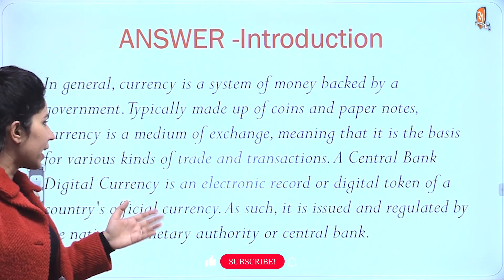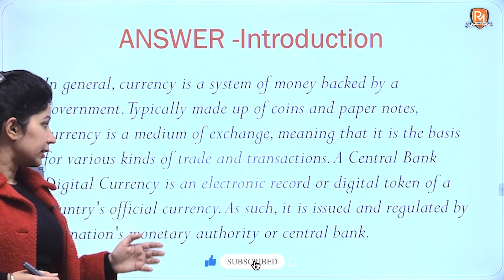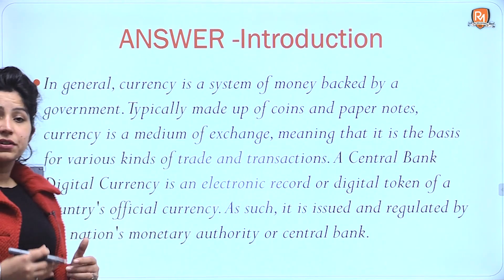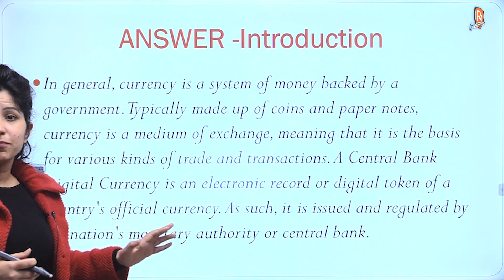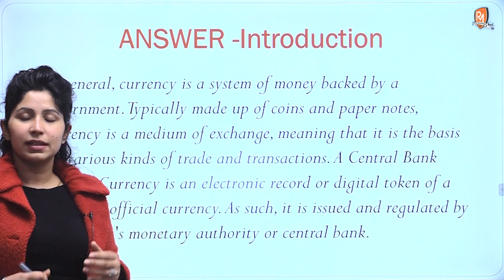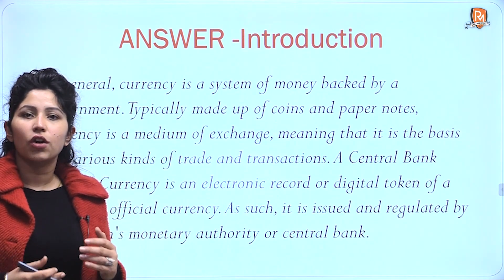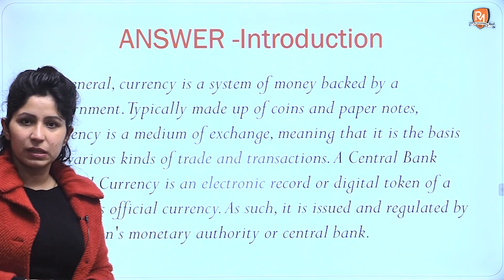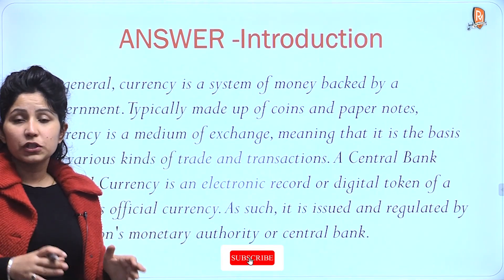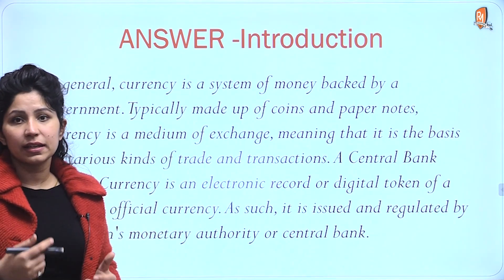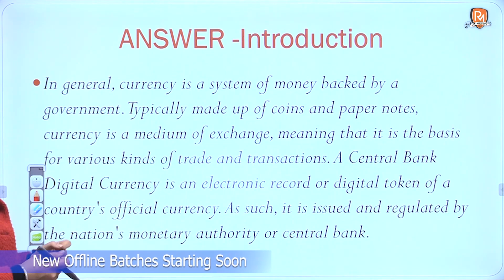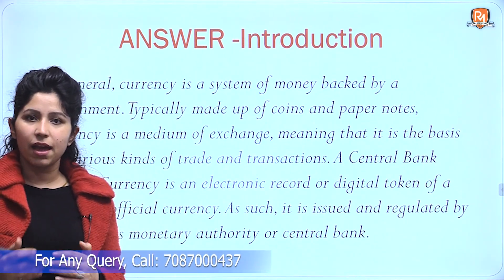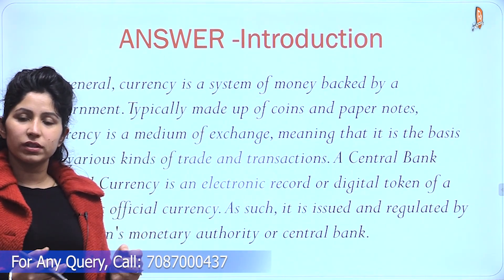Next, further define CBDC: a central bank digital currency is an electronic record or a digital token of a country's official currency. Here you have made your point to the examiner that you understand the definition of a digital currency, that it is backed by a central bank, and it is part of the official fiat money circulating in the system. This will form your introduction — go through it, read it again and again, and frame your own introduction if possible.